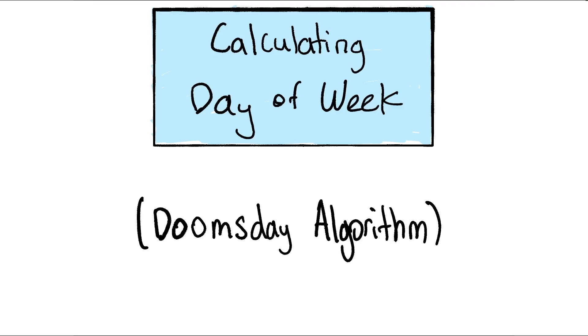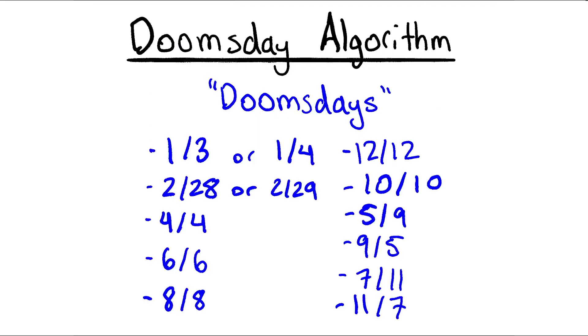Our final technique that we'll learn is to calculate the day of the week for any date. And this is a technique called the doomsday algorithm. The doomsday algorithm utilizes what are called doomsdays. And doomsdays are a fact that these 12 specific days in any year all fall on the same day of the week. For a leap year, the date 1/3 and 2/28 are replaced by 1/4 and 2/29.